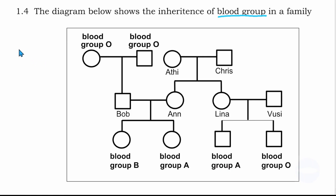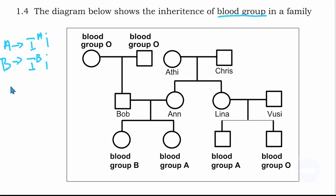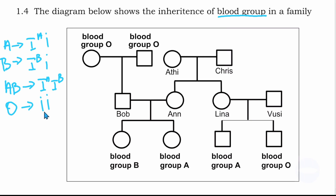I will write the genotype of each blood group. Blood group A: the genotype is capital I superscript A and small letter i. Genotype for blood group B: capital I superscript B and small letter i. Genotype for blood group AB: capital I superscript A and capital I superscript B. Genotype for blood group O: small letter i and small letter i. These are the genotypes we need to know by heart.